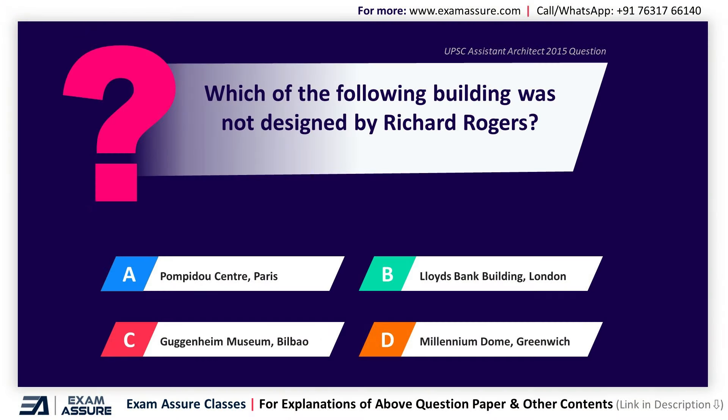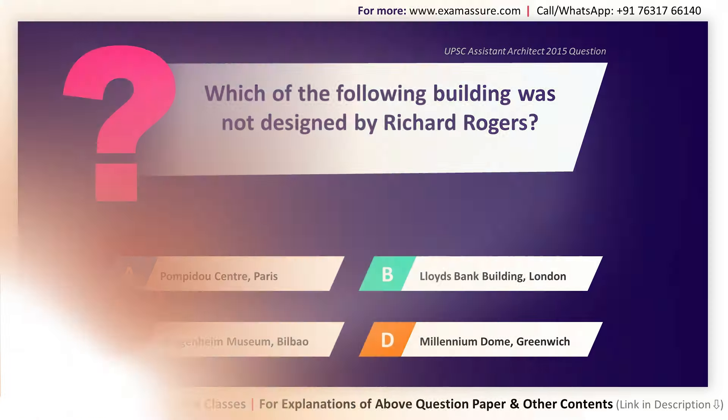Next question. Which of the following buildings was not designed by Richard Rogers? Option A: Pompidou Centre, Paris, Option B: Lloyd's Bank Building, London, Option C: Guggenheim Museum, Bilbao, Option D: Millennium Dome, Greenwich. The correct answer is Option C, Guggenheim Museum, Bilbao.